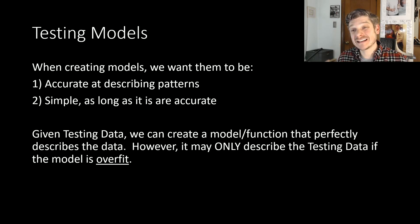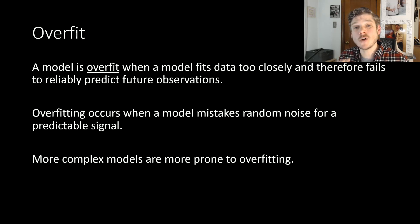If our training data creates a model that perfectly matches it, well, then typically it's going to be overfit because it's only good for that set of training data. All right? And then the testing data would let us see that, okay, it's not really working. But again, the testing data can absolutely have this issue where it is overfit. So what does that mean? Well, a model is overfit when it fits that data too closely and then fails to predict future observations. So it'll fail during the testing phase. And again, overfitting really occurs when the model mistakes are random noise for a predictable signal. And the more complex a model is, the more prone it is to being overfit.